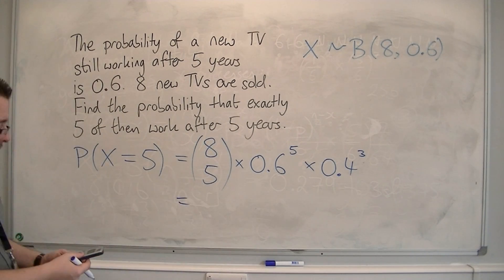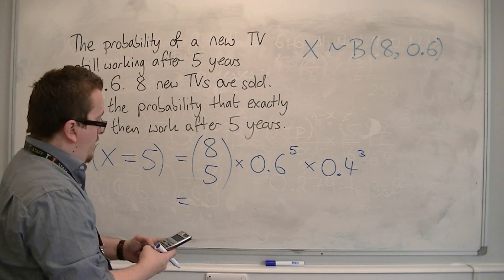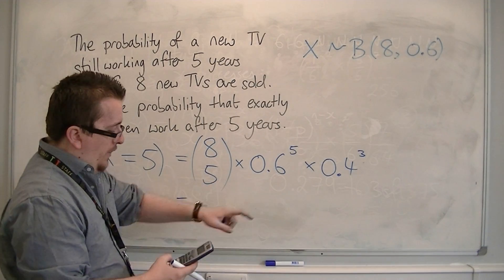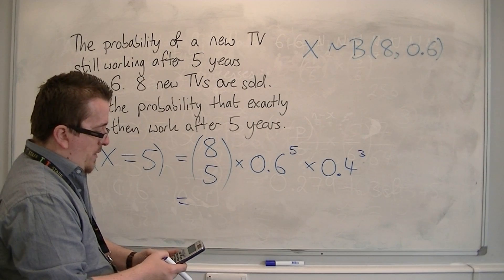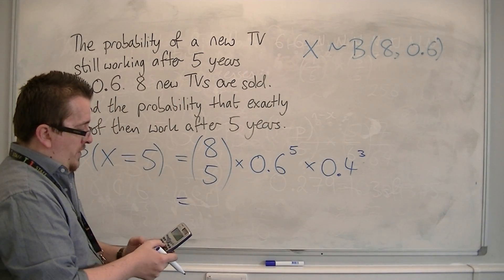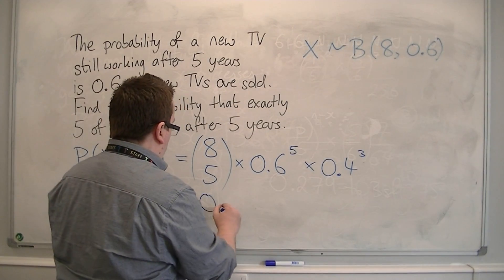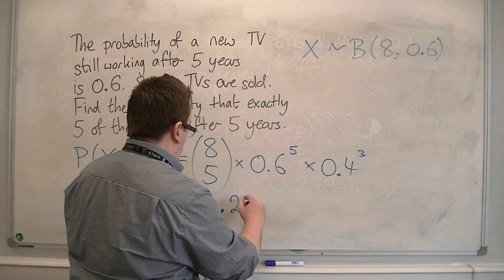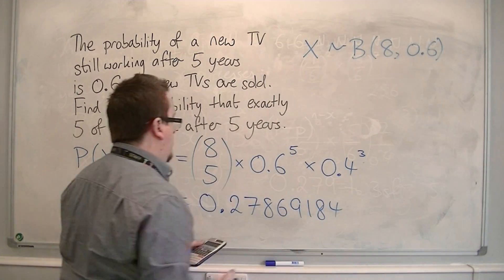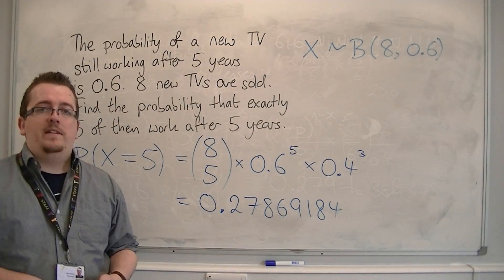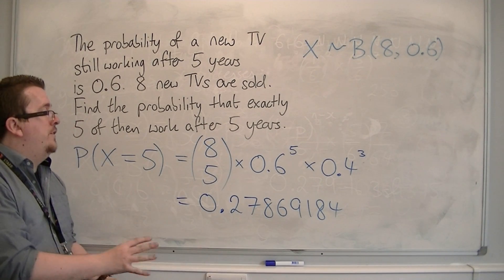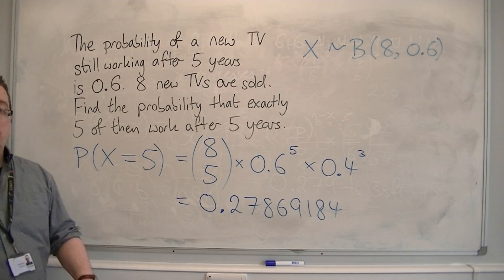So we have 8 NCR 5, which is 56, times by 0.6 to the power of 5, times by 0.4 to the power of 3. And we get 0.27869184, so it's about 28% — a 28% chance of exactly five of them working after five years.